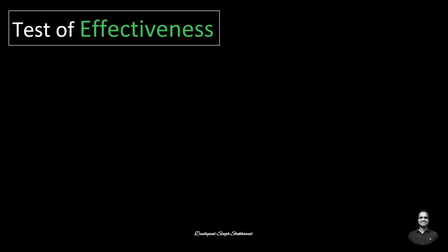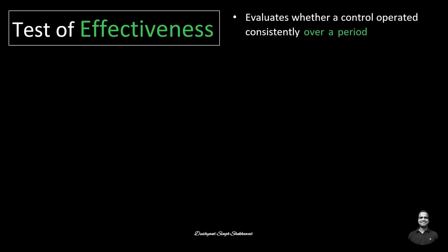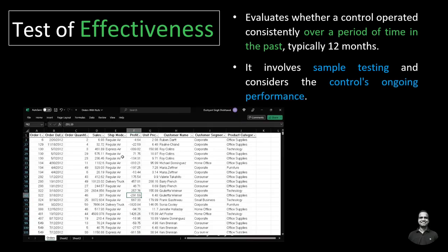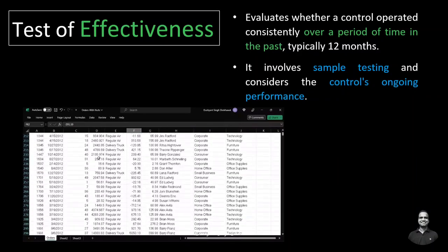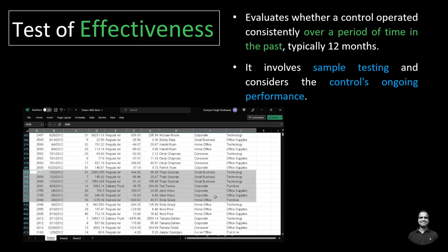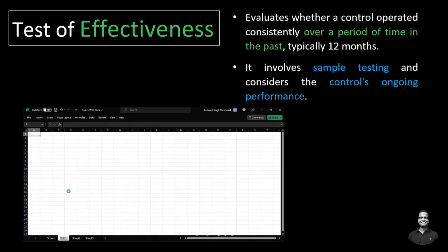The test of operating effectiveness checks whether a control operated consistently over a period of time in the past — typically 12 months. It involves sample testing and considers the control's ongoing performance. In sample testing, instead of examining every single transaction, a subset sample is selected from total transactions for evaluation.